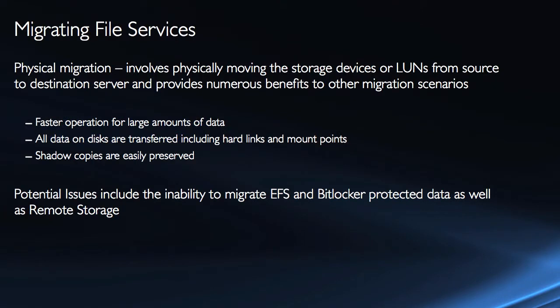The next step — or an alternative approach — would be the physical migration. The physical migration involves actually moving the physical storage devices, or the LUNs (logical unit numbers), from source to destination server. Physical migration is much faster for larger amounts of data because we're actually taking the storage and just putting it on the new server — not copying anything. All data on the disk is transferred, including mount points, any hard links, and shadow copies are easily preserved because they're on the disk.